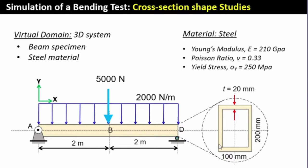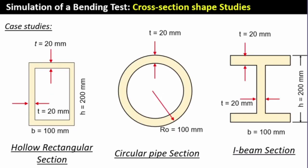The cross-section of the beam is shown here. We're going to set up this simulation within a finite element code and run it for three different cross-sections: a rectangular cross-section, a circular cross-section, and an I-beam. We'll see what the yield stress and deflection will be, and the effect of these different cross-section shapes on beam behavior.